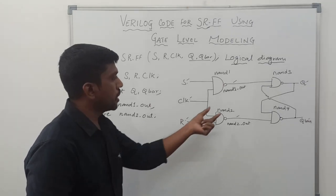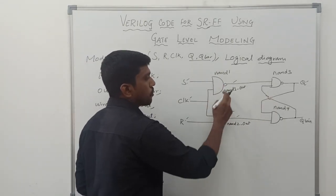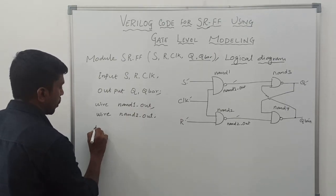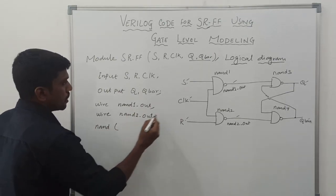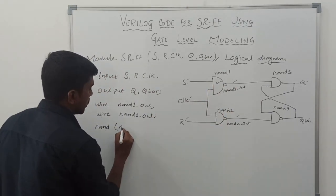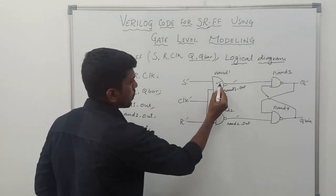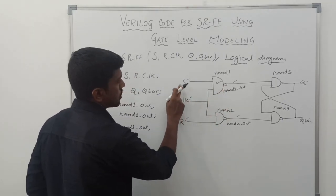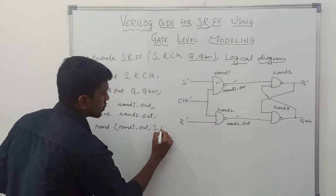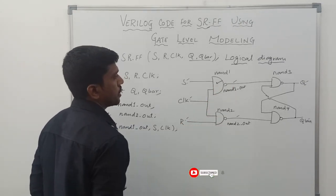After assigning the wire signals, we write the functions for each NAND gate. There are four NAND gate operations in total. For the first NAND gate: the output is NAND1-out, and the inputs are S and clock. That completes the first NAND gate operation.